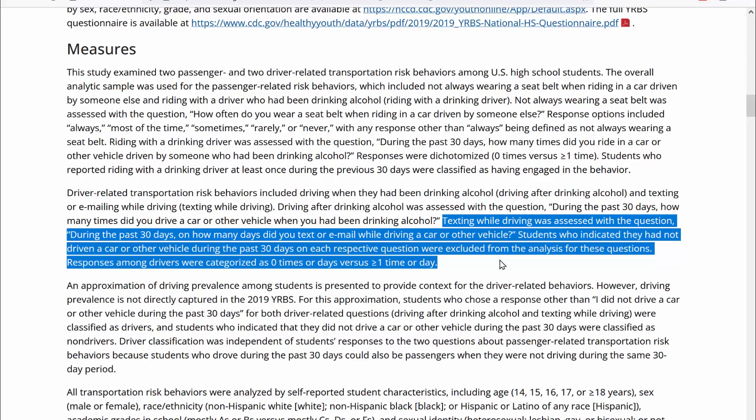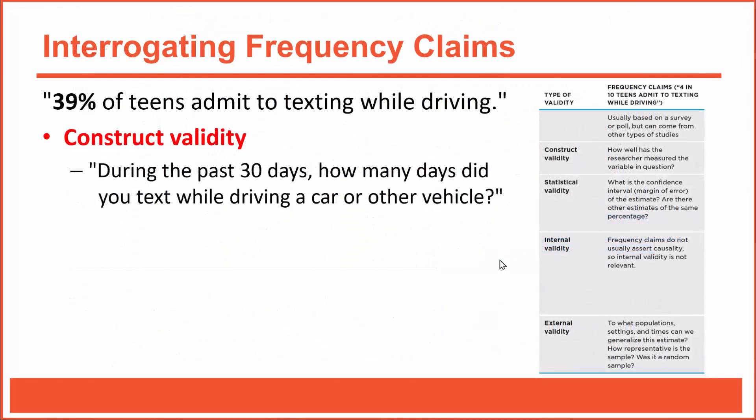Students who had not driven during the past 30 days were excluded from the analysis — reasonable and appropriate. Responses were categorized as zero times versus greater than or equal to one time. So teens were coded as either not texting while driving, or texting one or more times during the past 30 days. Based on that, 39% of respondents admitted to texting and driving one or more times. Based on all this information, I conclude that the construct validity of this claim is good — the target variable was measured appropriately.